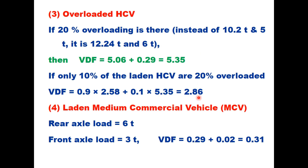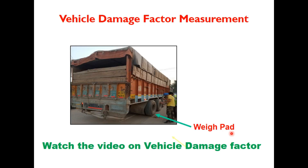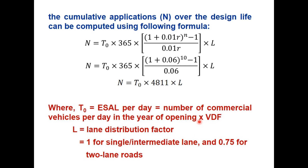Based on these examples, the recommended VDF values in the IRC code are: for laden heavy commercial vehicles 2.86, and for unladen or partially laden vehicles 0.31. For medium commercial vehicles, the values are 0.34 and 0.02 respectively. VDF is generally determined from an axle load survey, where a weigh pad is used to record the weight of each axle of the truck.